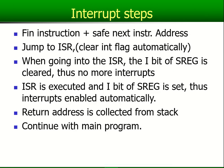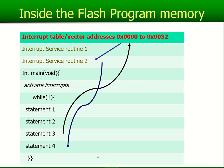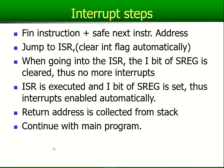So going back to the interrupt steps: you finish an instruction, and automatically it will save the next instruction address — in my example, the address of statement number four. Then you jump to the interrupt service routine, first going to the vector table and then to the ISR. It also says you will clear an interrupt flag automatically — I will talk about clearing the flag automatically just after this.